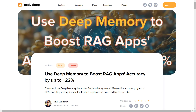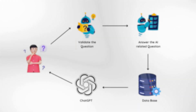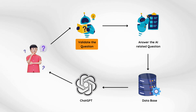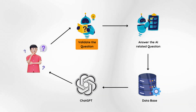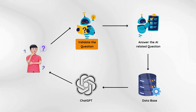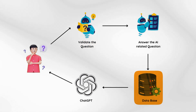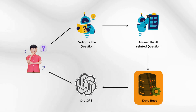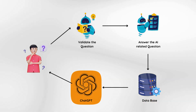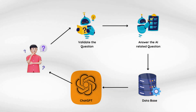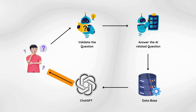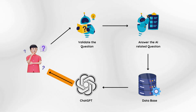We used ActiveLoop, with whom we've partnered on this project, to manage the whole memory and query process. So the overall process is quite straightforward: we validate the question, ensuring it is related to AI and our chatbot should answer it; query our database to find the good and relevant sources; and then use ChatGPT to digest those sources and give a good answer for the student.